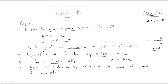The fifth point is that the Nyquist plot is developed using the mathematical principle of arguments. So to summarize the main purposes: first, it gives the complete frequency response; second, the number of closed loop poles in the right half of the S-plane; third, the range of K values for stability; fourth, relative stability; and fifth, it is based on the principle of arguments.